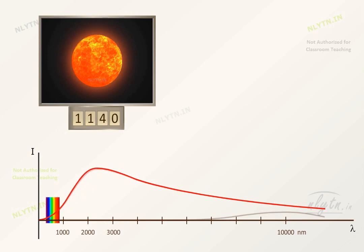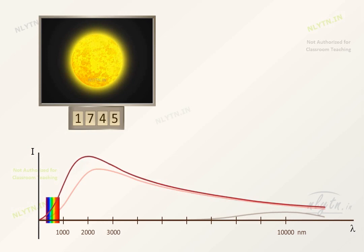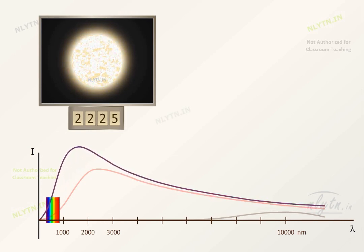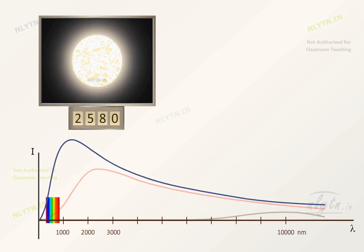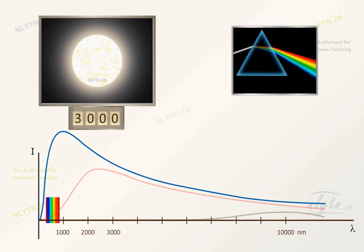If we increase the temperature further, then around 3000 kelvin, the intensity of radiation becomes high for all wavelengths in the visible region. And the object appears to be white. You must be familiar that white light is actually composed of all the colors of wavelengths in the visible region.